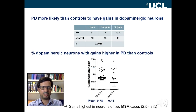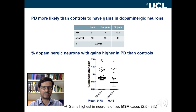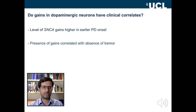This can occur in PD, in MSA, and also in controls, but it is more common in the PD nigras overall, and the level in each nigra is higher in PD than in controls, although it's quite low overall. The gains were highest in dopaminergic neurons in a couple of our MSA cases, but we only did five so we need more work on this. We were able to find some possible clinical correlates: SNCA gain level correlated negatively with onset age, and presence of SNCA gains correlated negatively with tremor at onset and possibly with asymmetry, which was very interesting.